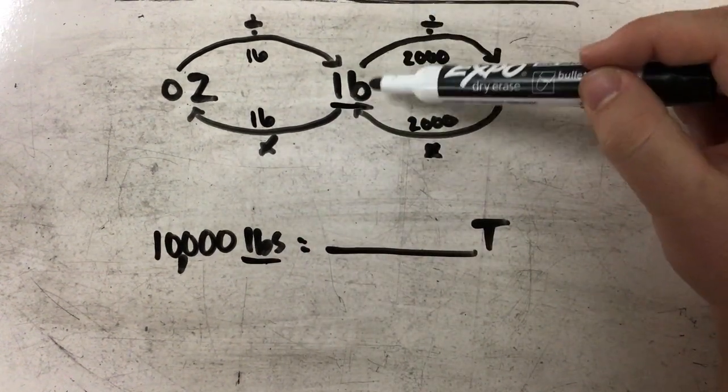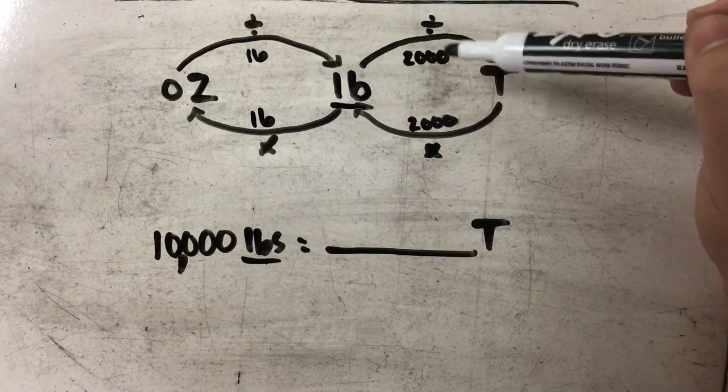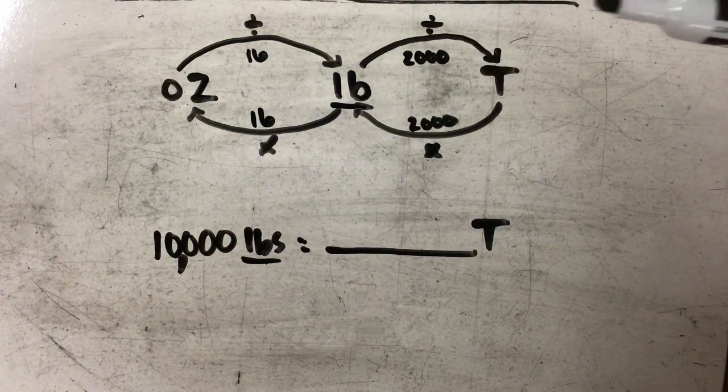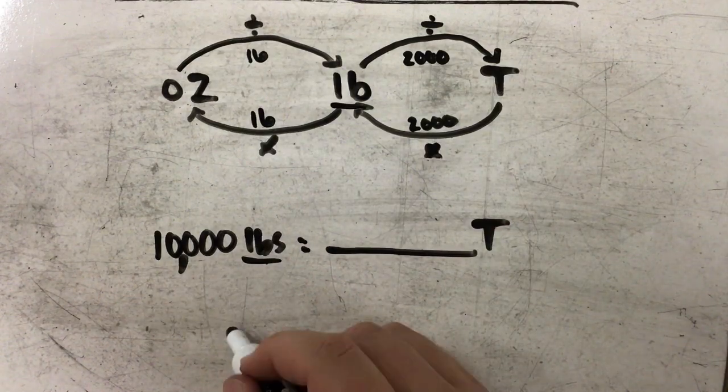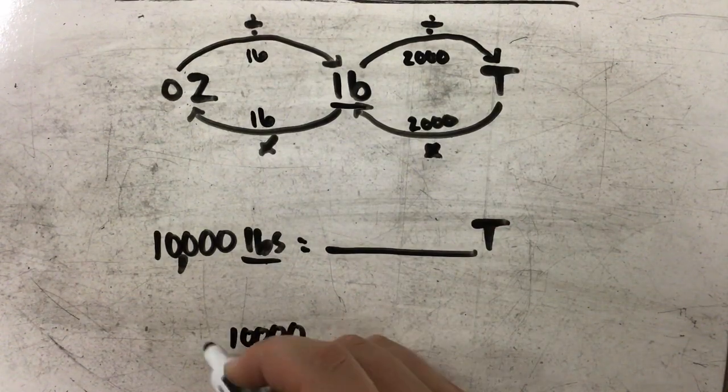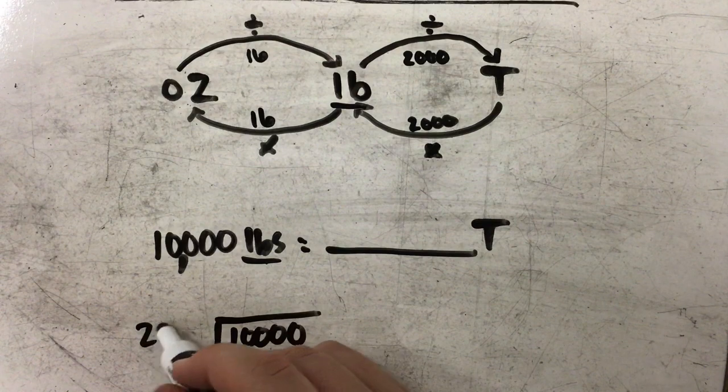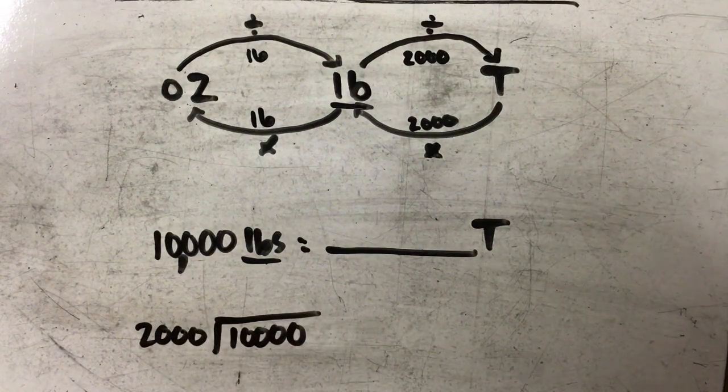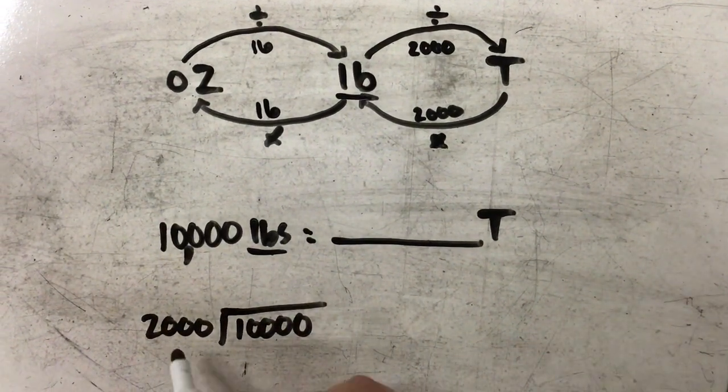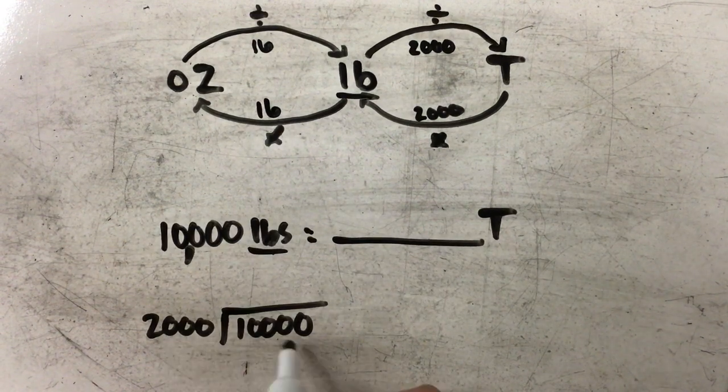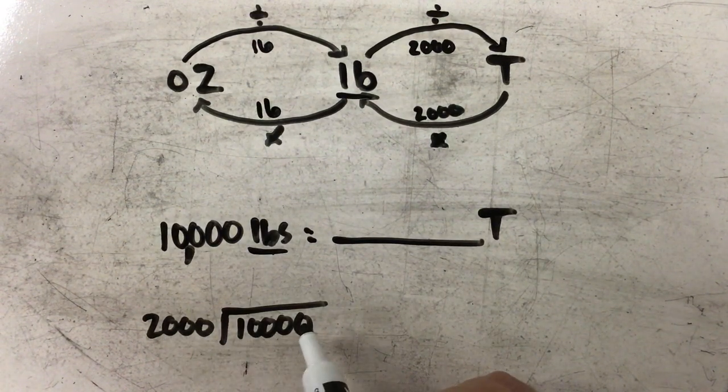So here's 10,000, and I'm going to divide by 2,000. And this looks like a really big problem, but if you remember, I actually can cancel zeros out when I have them at the end of my numbers.